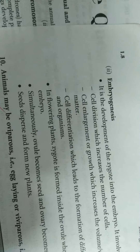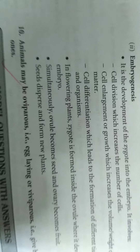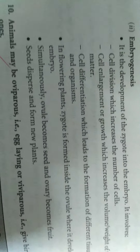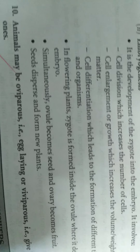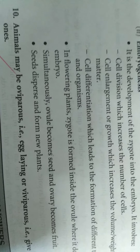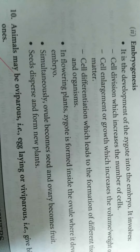Example of oviparous animals: birds. In viviparous animals — the majority of mammals — the embryo develops inside the body of the female.